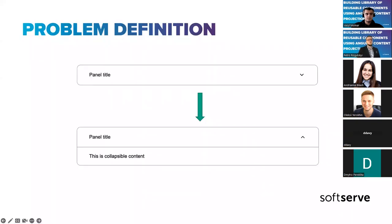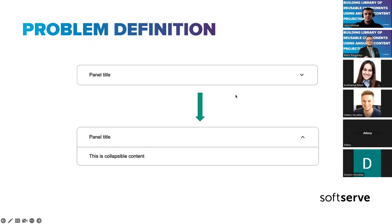Let's say you want to have your library of components. Here on the first slide you can see the first citizen of our library — a simple collapse panel. In its collapsed form it has a title and a collapsed toggle, and in expanded form we can see the collapsible content.